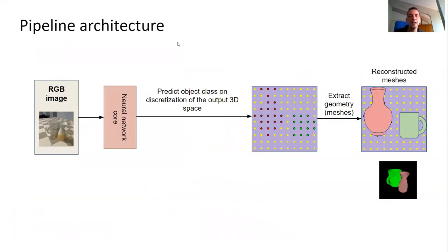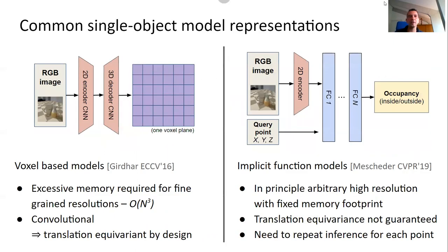This leads us to the model. We input an RGB image, pass it into a neural network core that predicts object classes on a discrete grid in 3D output space — a multi-class multinomial at every point — and then apply an advanced variant of marching cubes to get meshes. Looking at the two most common volume representations: voxels are convenient for neural networks but require memory cubic in the voxel side. Implicit function models like occupancy networks can get arbitrary high resolution with fixed memory, but don't guarantee translation equivariance and require repeated inference for every query point.